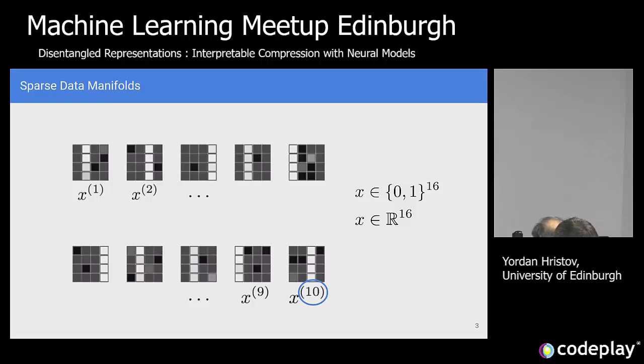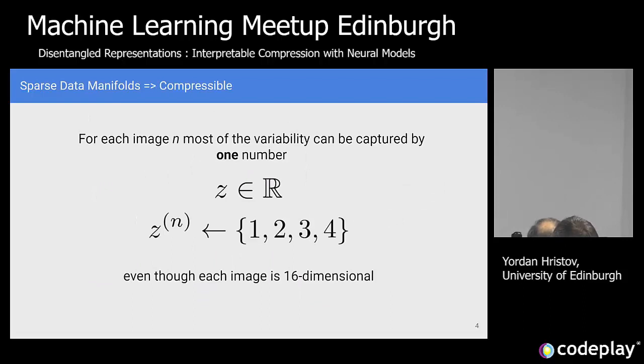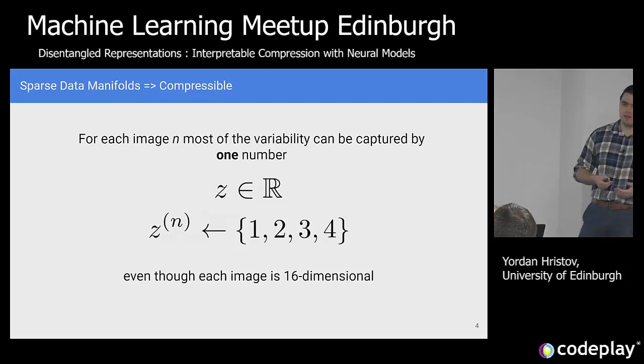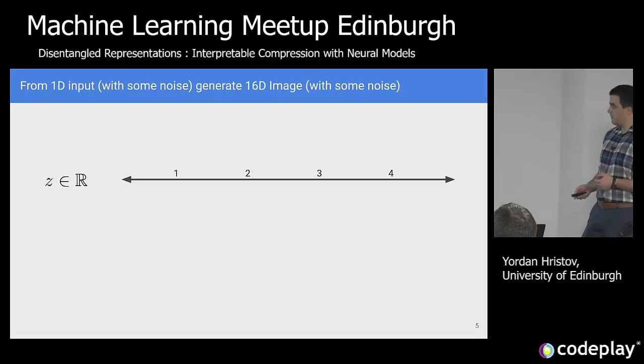The more interesting bit about this dataset is that there are certain patterns appearing — in a single 4-by-4 image, there is a single column that's active at a time. That means we can use a single number, which lives in a one-dimensional space, to explain the variability between the different data points. Even though we have a 16-dimensional space — which we can't even plot — the whole variability in the dataset can be explained by a single number.